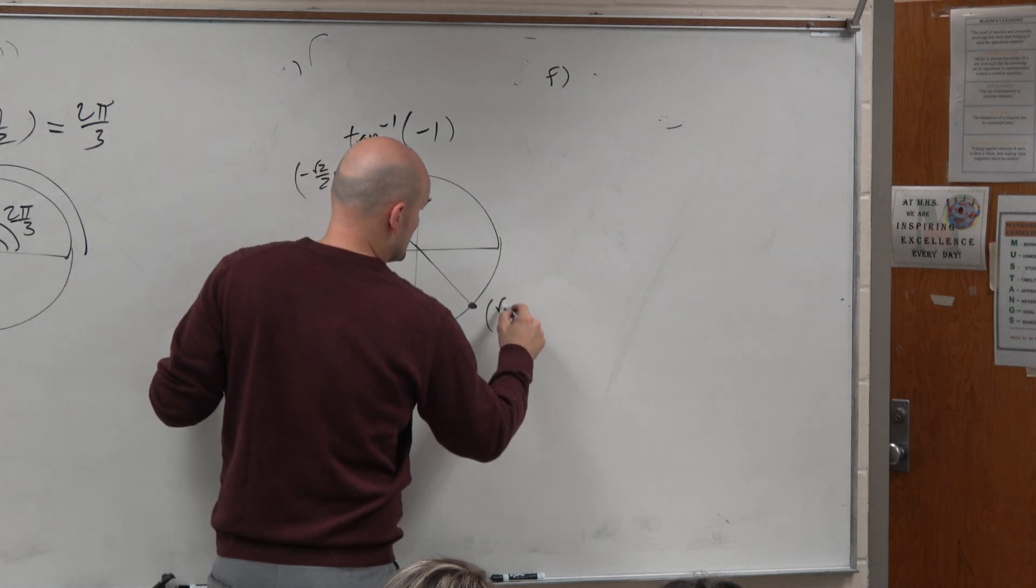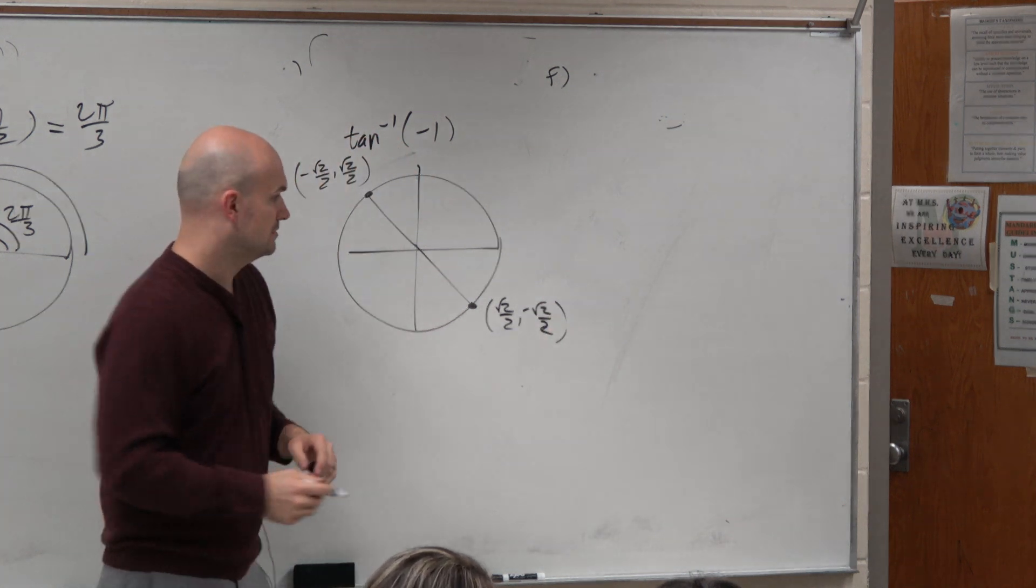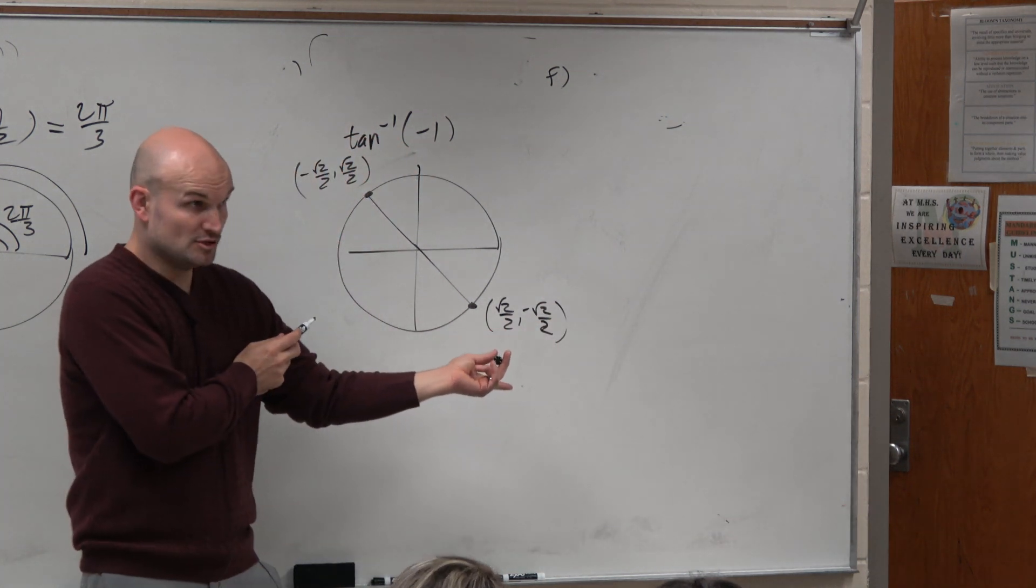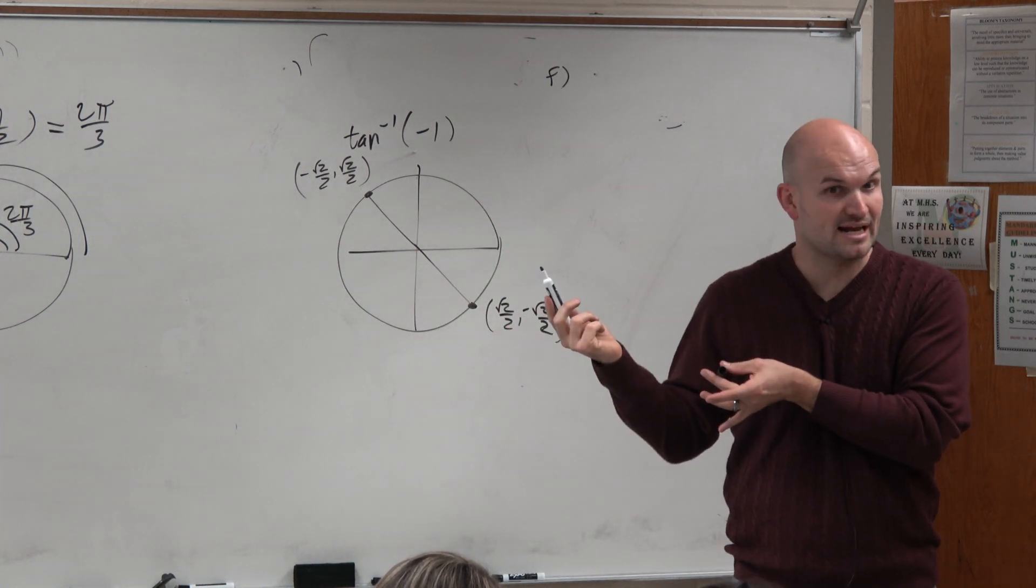Or this coordinate point: square root of 2 over 2, comma negative square root of 2 over 2. Wouldn't you guys agree? Both of those points, the tangent of y over x, both produce negative 1.